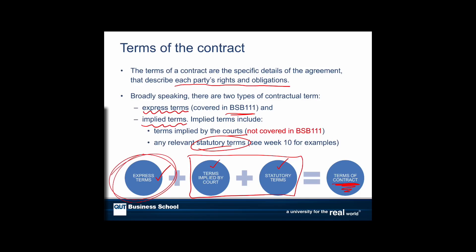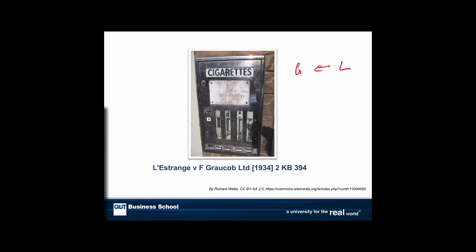There was no express term that the cigarette machine would work, but the courts will often imply that there's a term that it will work — which is quite reasonable if you buy a machine, you expect it to work. However, Graucob was relying on a disclaimer: a term in the contract which excluded these implied warranties. Lestrange didn't know the contract contained this clause, and in fact the court noted it was in regrettably small print, but quite legible — kind of hidden, but visible if you looked.